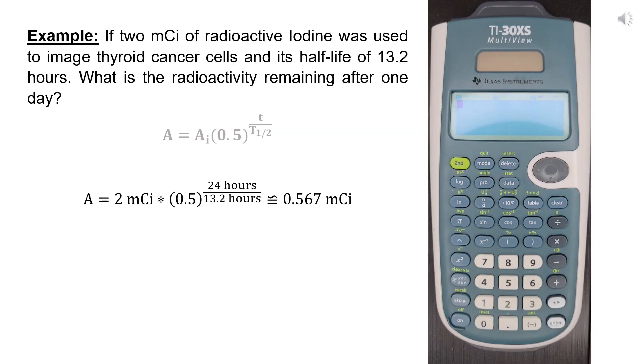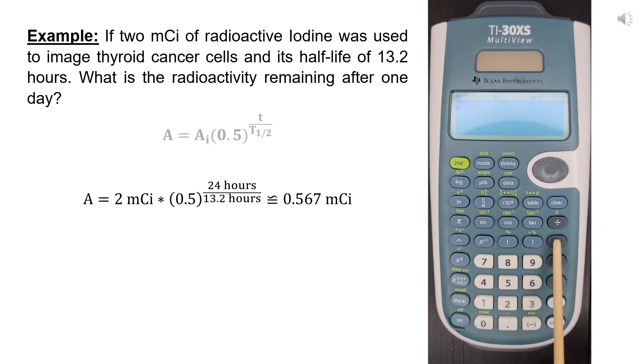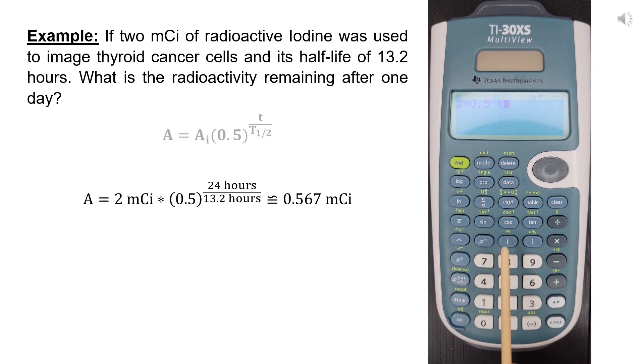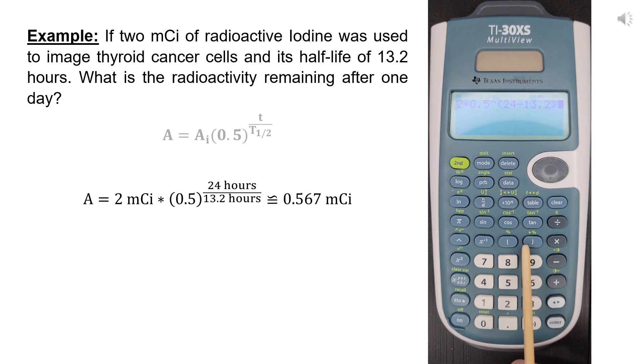For example, if 2 millicuries of radioactive iodine was used to image thyroid cancer cells, and its half-life is 13.2 hours, what is the radioactivity remaining after one day? The remaining radioactivity equals 2 times 0.5 to the power (24 divided by 13.2), which equals approximately 0.567 millicuries.